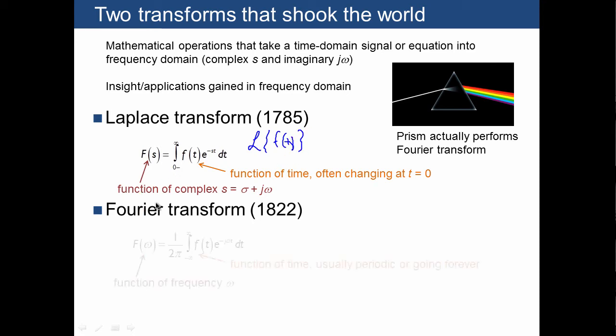The Fourier transform has a very similar definition. It's also an integral, but it goes from negative infinity to infinity, so the starting point is different. Instead of e to the negative st, it's confined to e to the negative j omega t. There's also a factor of 2 pi, but that's not of fundamental importance.